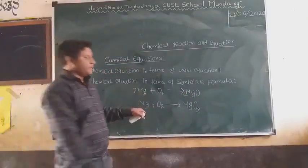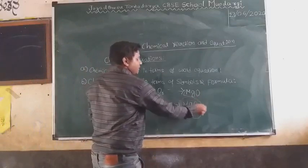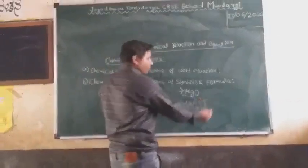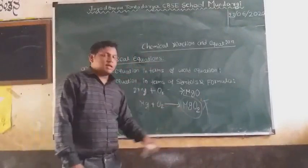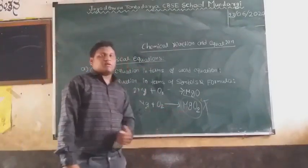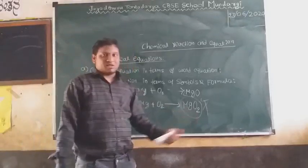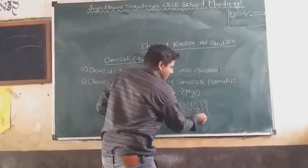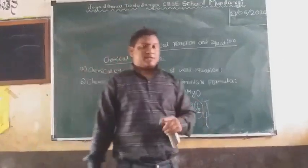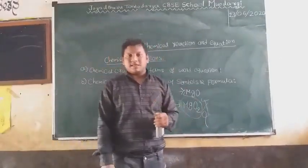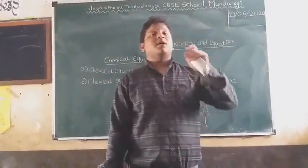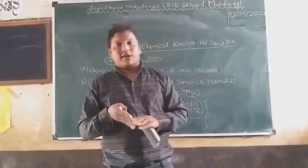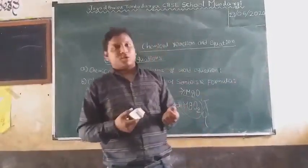When you write the formula incorrectly, the valency goes wrong. You should balance the chemical reaction, but not by writing incorrect formulas. During balancing, the valency must be satisfied. In this case, the valency of Mg is 2 and the valency of oxygen is also 2. Because of that, you should write the formula correctly. Today I will present you the valency chart. Before coming to the next class, you should study that valency chart — valency 1, valency 2, valency 3, valency 4, negative valencies, and positive valencies. I will send you that chart.